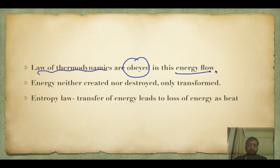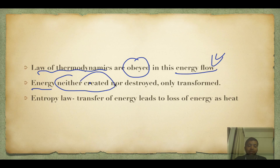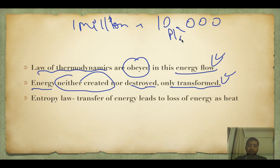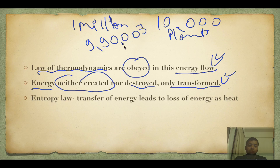The laws of thermodynamics are obviously obeyed in this energy flow. Energy can never be created nor destroyed — it is only transformed. Out of one million joules from the Sun, only 10,000 are fixed by plants. The rest — 990,000 joules — are dissipated as heat and respiratory losses of plants.